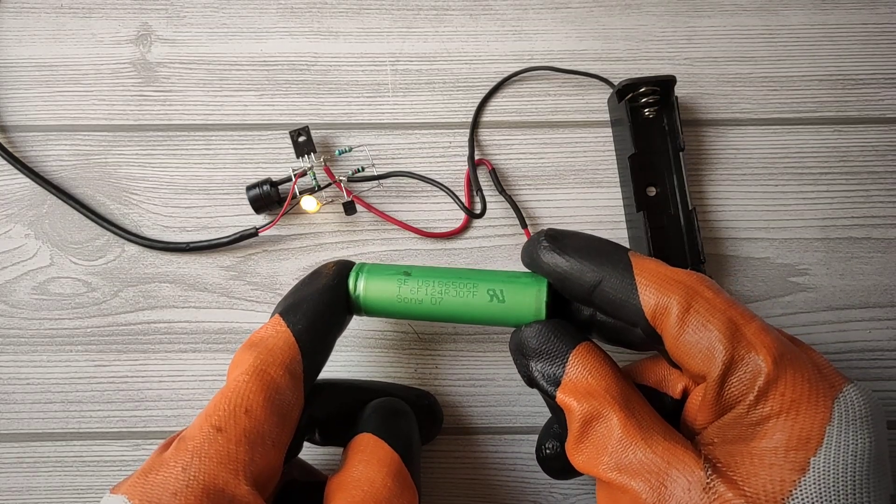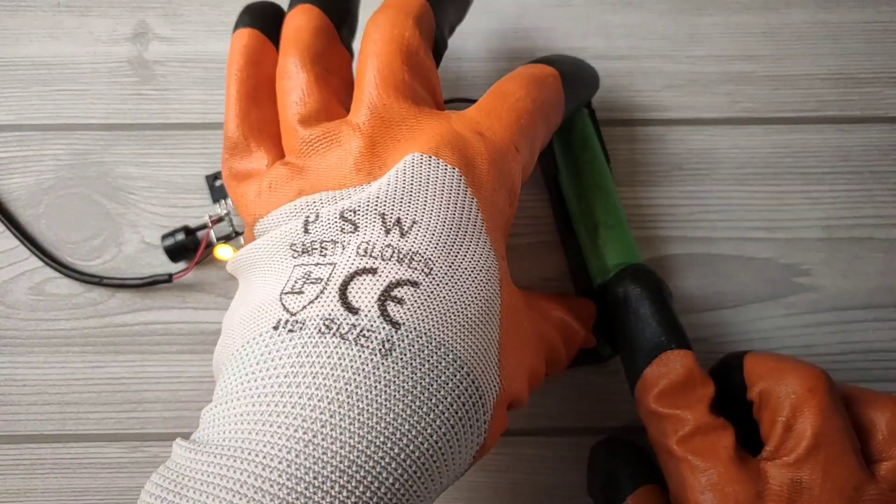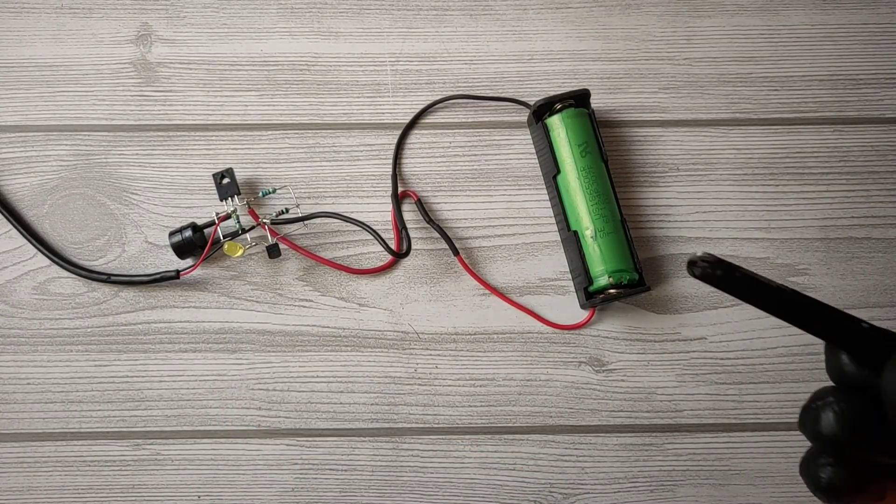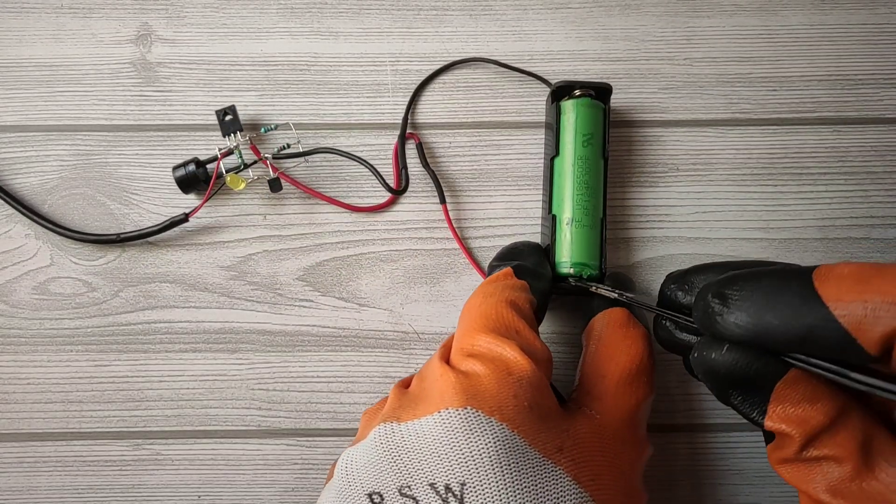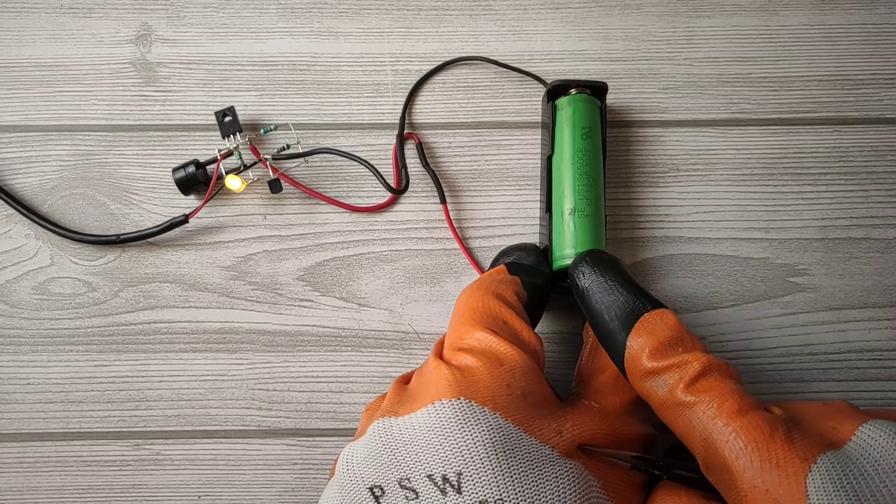Now let's connect this 18650 lithium battery. You can see the LED and buzzer turned off. It will turn on when the battery gets fully charged and will indicate an alarm that the battery is fully charged.